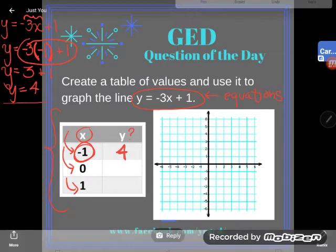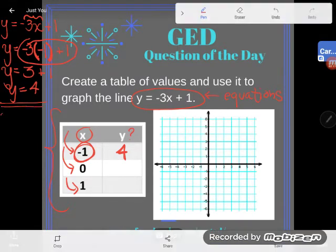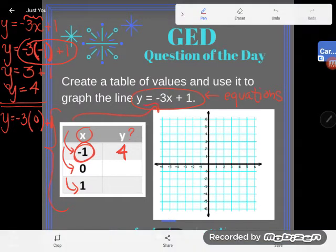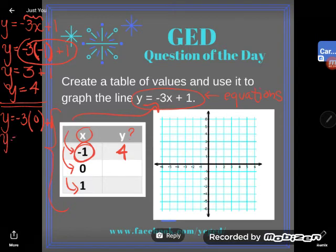Now you might say to yourself, well, what about the other ones? Well, you just keep plugging them in. What would happen if I turned X instead of turning it into negative 1, I turned it into 0? Again, now I'm plugging in 0 into this original equation. So a negative 3 times 0 is just 0. And if I add 1 to that, I get 1. So what happened when I made X into 0? Well, Y became 1.